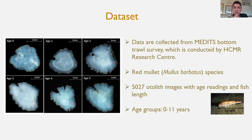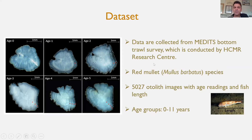A few words about the dataset. Fish are collected from national trawl surveys conducted in Greek waters every year. The dataset includes around 5,000 images with age readings as well as measurements of fish length. The specific otoliths are from red mullet species. In the image, you can see some sample otolith images where the red dots indicate the annual rings — each red dot represents one year of life.